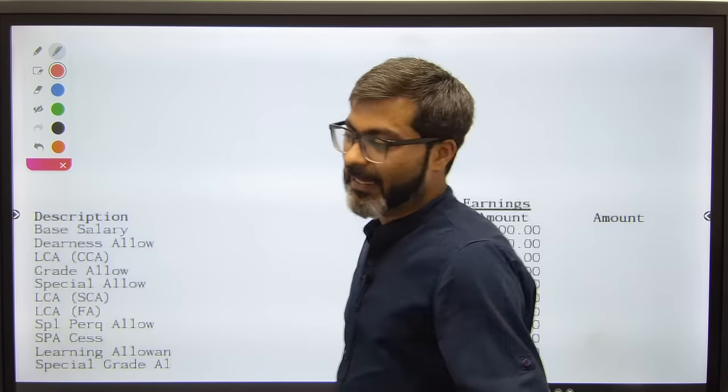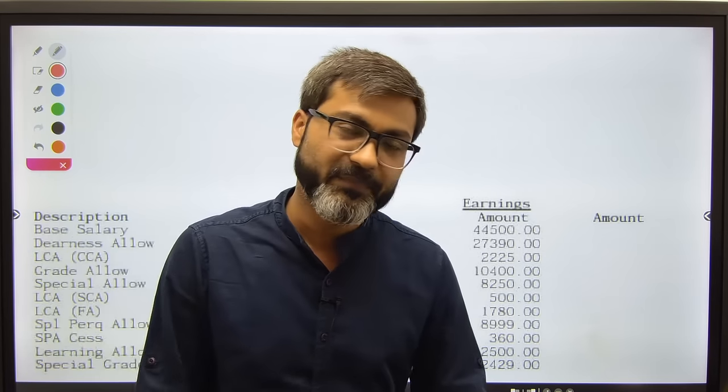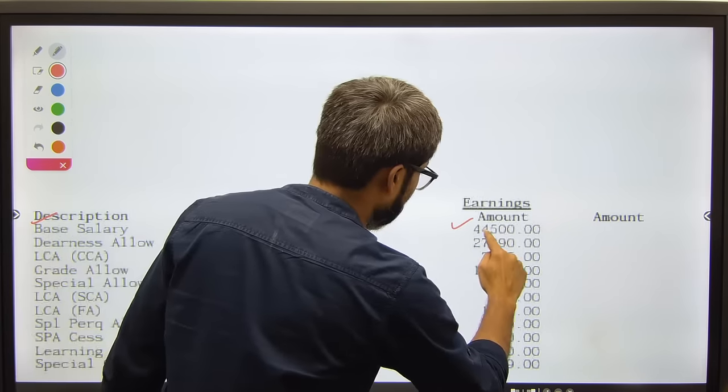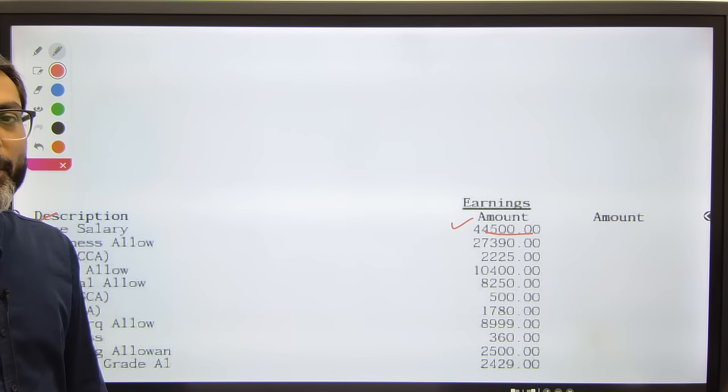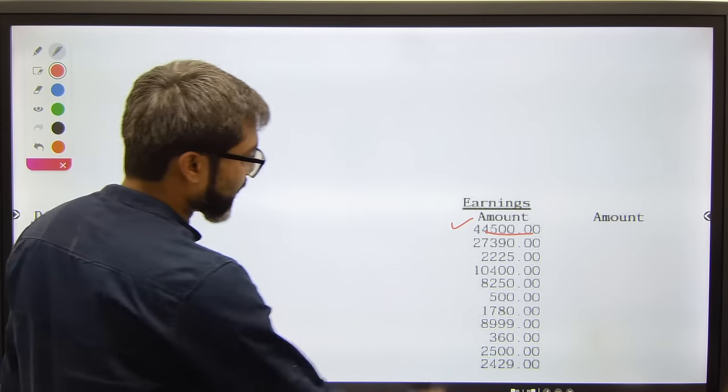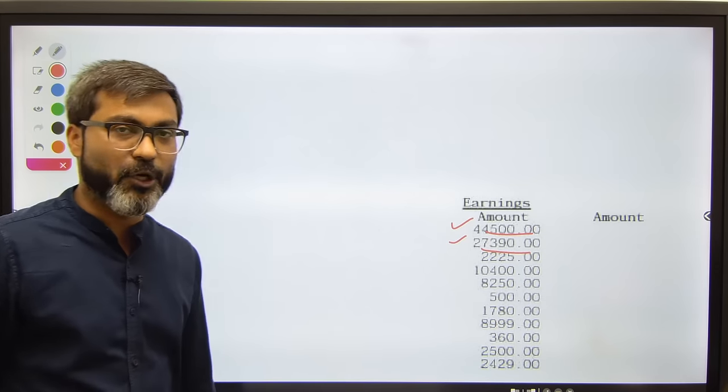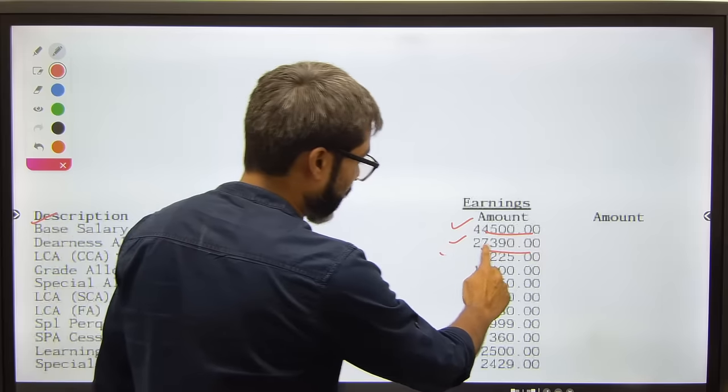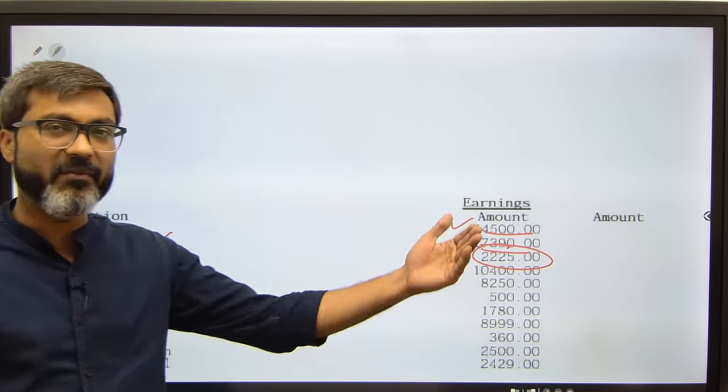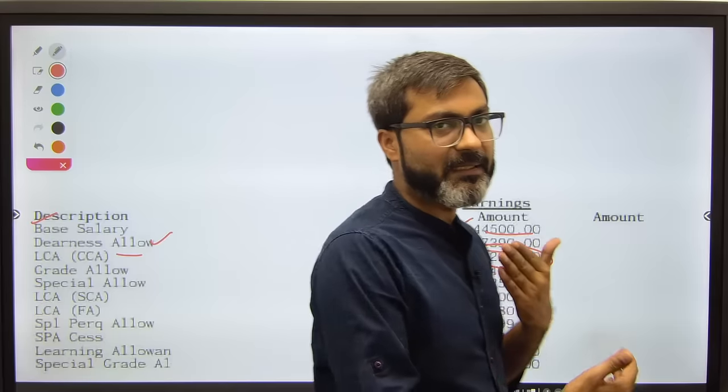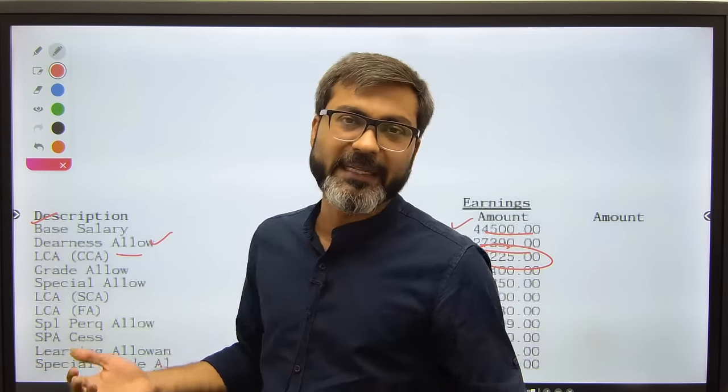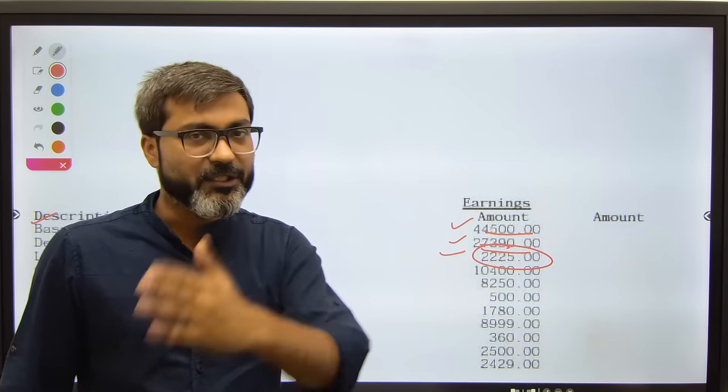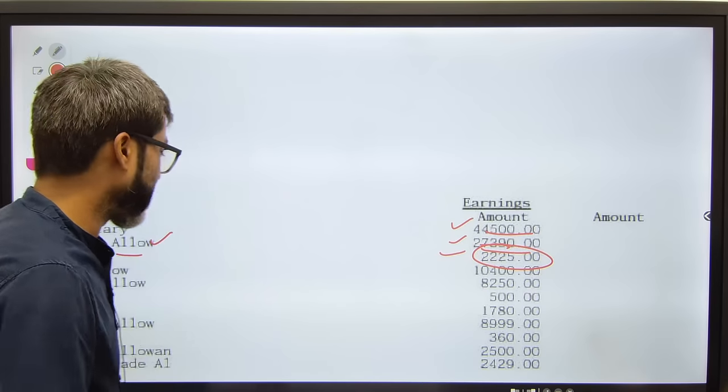First of all, we all know the basic salary. The basic salary of a NABARD Grade A officer is forty-four thousand five hundred. That has been mentioned in the notification only. The dearness allowance is twenty-seven thousand three hundred and ninety. When you join as a NABARD Grade A officer, you get city compensatory allowance worth around two thousand rupees. That depends on the city as well - it may vary depending on whether it's a type X, Y, or Z city. In metro cities like New Delhi, Mumbai, you'll get more; in other cities like Lucknow, Kanpur, you'll get less.